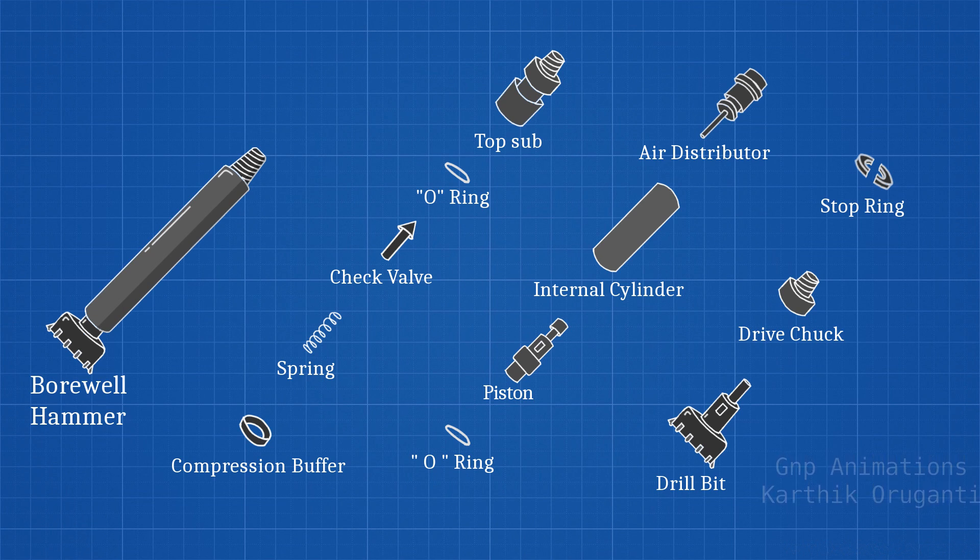After finding a location or point, the borewell operator starts drilling. Here are some basic controllers the operator uses while drilling: top head drive up and down motion, top head drive rotatory motion, air pressure, hydraulics, mast controller, and the accelerator. These are some basic drilling controllers or levers.